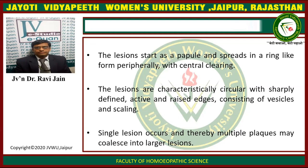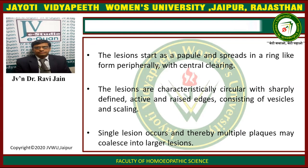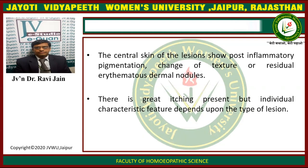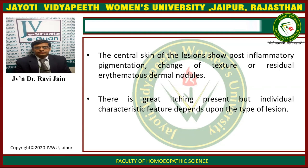The lesions start as papules and spread in a ring-like form peripherally with central clearing. The lesions are characteristically circular with sharply defined active and raised edges, consisting of vesicles and scales. A single lesion occurs and thereafter multiple plaques may coalesce into larger lesions. There is great itching present, but individual characteristic features depend on the type of lesion.